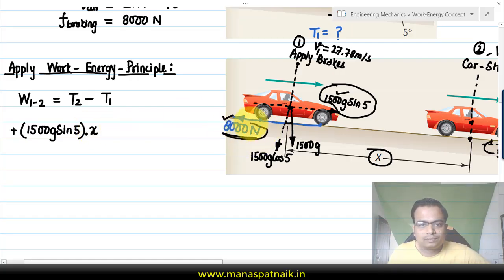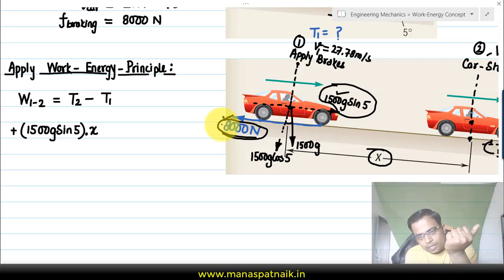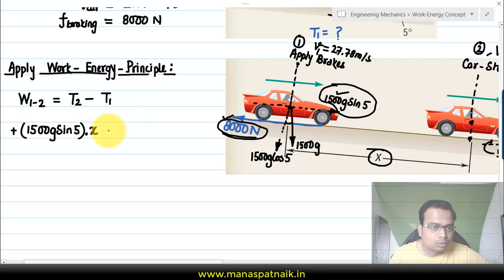Now let's worry about this braking force of 8000 newtons. The motion is happening this way, braking force is acting this way. You can clearly see braking force and displacement are opposite in direction—that means negative work. So I will put a negative sign over here: negative 8000 multiplied by x.